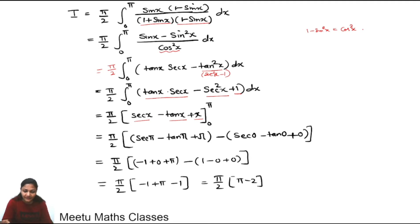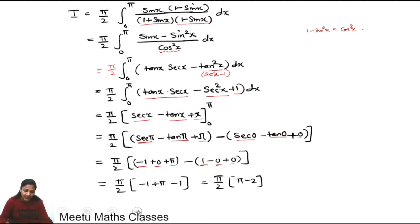Now substituting limits from 0 to π: put x = π: secπ − tanπ + π = −1 − 0 + π. Put x = 0: sec0 − tan0 + 0 = 1. So we get (−1 + π) − 1 = π − 2. Since 2I = π(π − 2), the final answer is I = π/2 × (π − 2).